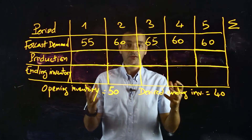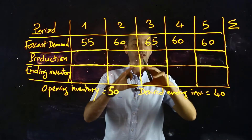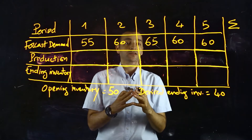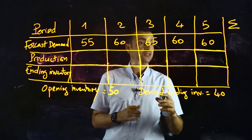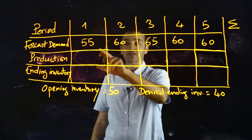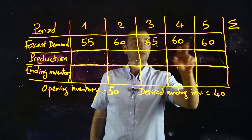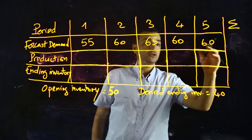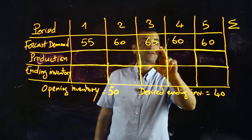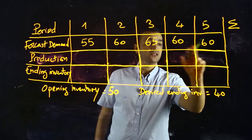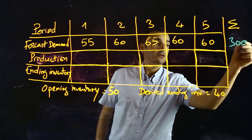The first step is to calculate the total production needed for all these periods. So we have to add the forecast demand for the five periods: 55 plus 60 plus 65 plus 60 plus 60, and the total is 300.